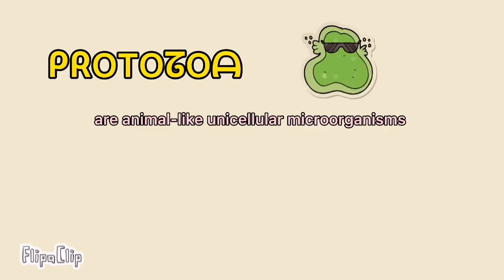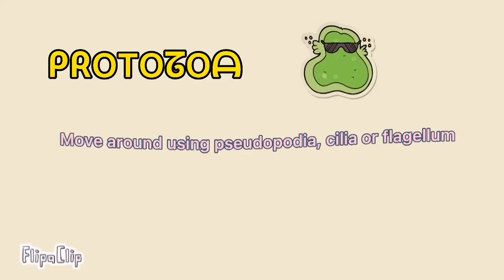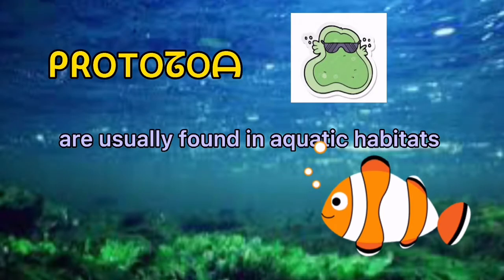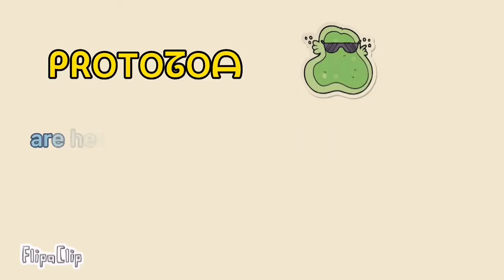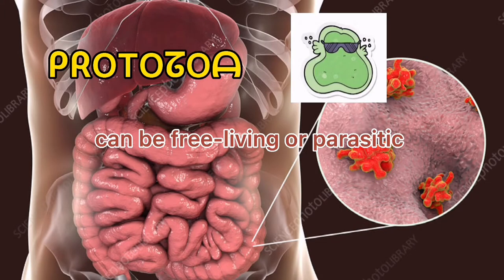Protozoa are animal-like unicellular microorganisms. How do they move? They move around using pseudopodia, cilia, or flagellum. Where can you find protozoa? Protozoa are usually found in aquatic habitat. Are protozoa heterotrophs? Protozoa are heterotrophs or autotrophs. Are protozoa free-living? Protozoa can be free-living or parasitic.